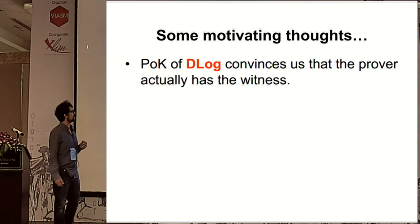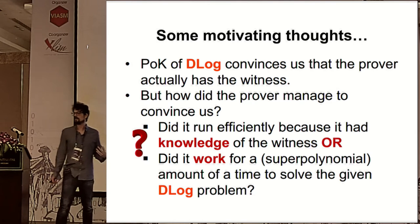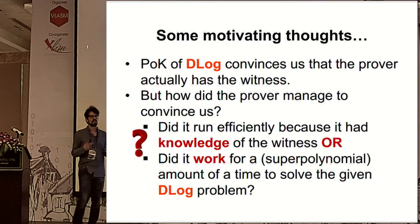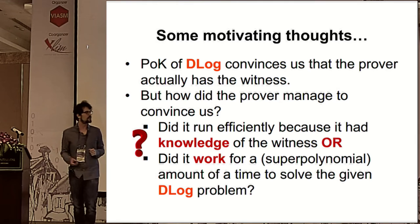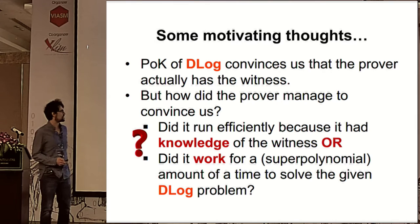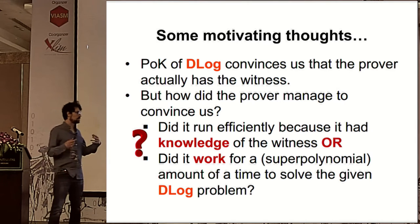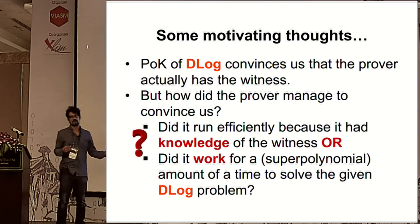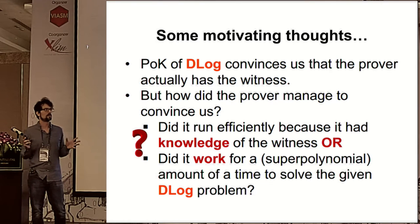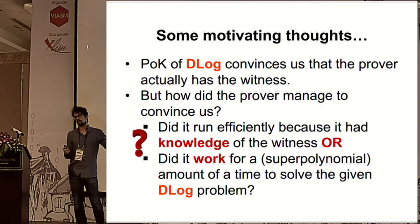What we were thinking is: we are convinced that the prover knows the witness, but how did the prover manage to do that? Did it actually happen efficiently because it had some a priori knowledge — the witness — or did it spend some super-polynomial effort to solve this specific challenge? Starting to see it more generally, the knowledge challenge and the work challenge are exactly the same in this special case.